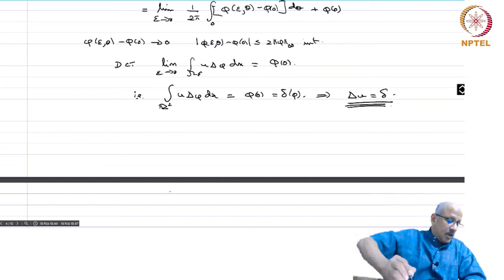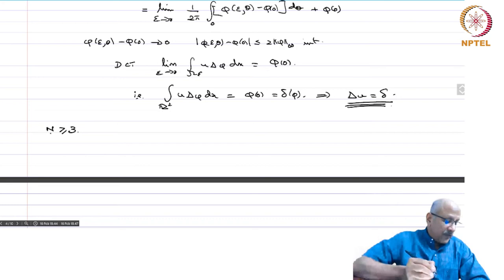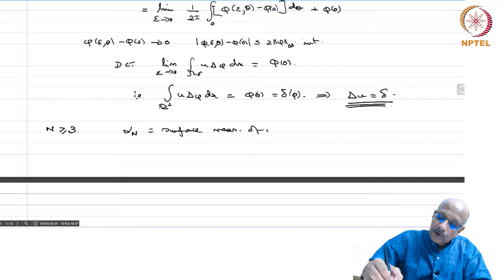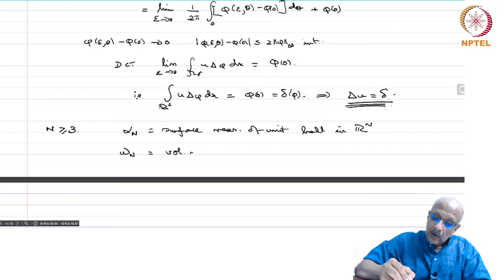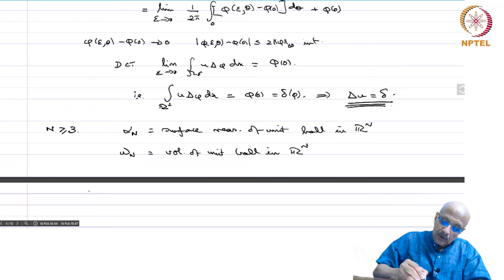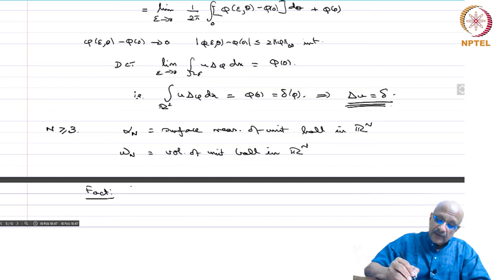What about n ≥ 3? Let α_n denote the surface measure of the unit sphere in ℝⁿ, and ω_n be the volume (n-dimensional Lebesgue measure) of the unit ball in ℝⁿ.